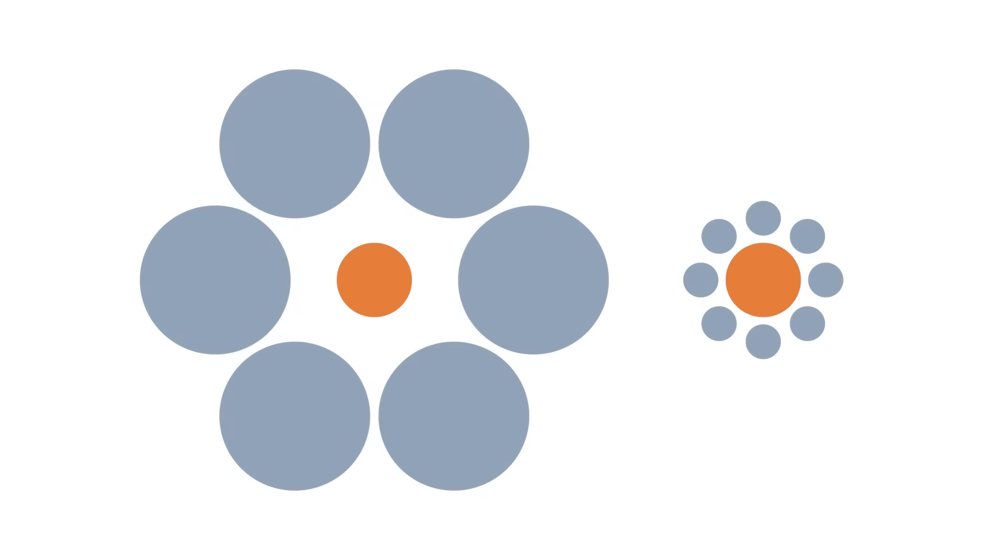Ebbinghaus Illusion. The two orange circles are exactly the same size, but the difference in surrounding circles makes it seem like the right one is larger.